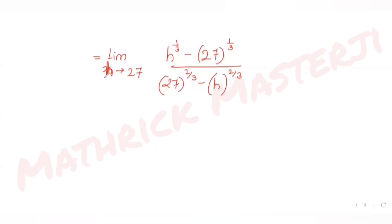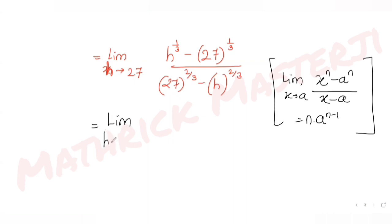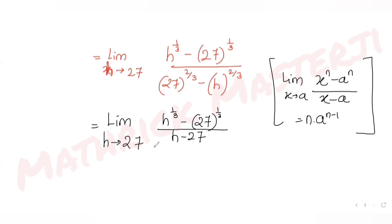Now I want to convert this into the standard form: limit x→a of (x^n − a^n)/(x − a) = n·a^(n−1). I can see that form in both the numerator and denominator. I'll divide both by (h − 27): numerator becomes [h^(1/3) − 27^(1/3)] / (h − 27), and I divide the denominator by (h − 27) as well.